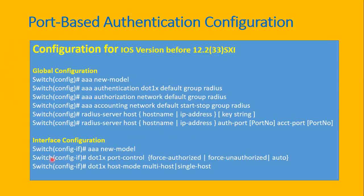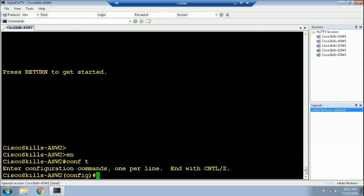Here is the general configuration for port-based authentication for IOS versions before 12.2.33 SXI. It has two sections: the first is the global switch configuration, and the second is the interface configuration for interfaces we want to enable for 802.1X. We will go into detailed configuration in the next slide. We are on Cisco Skills access switch one, which has the older IOS version, so let's get started with the global switch configuration.